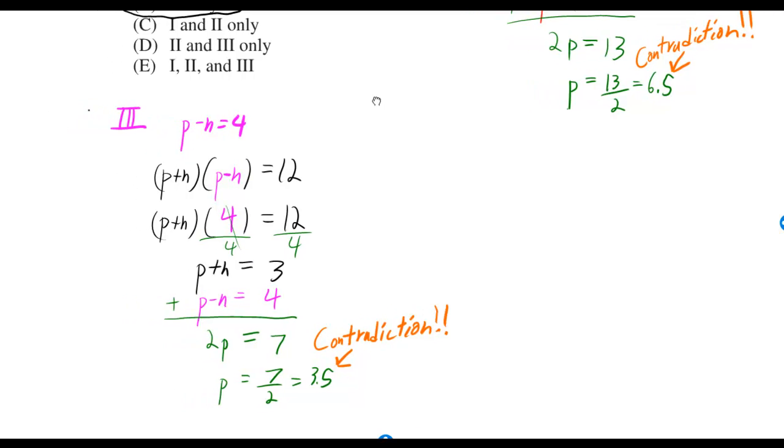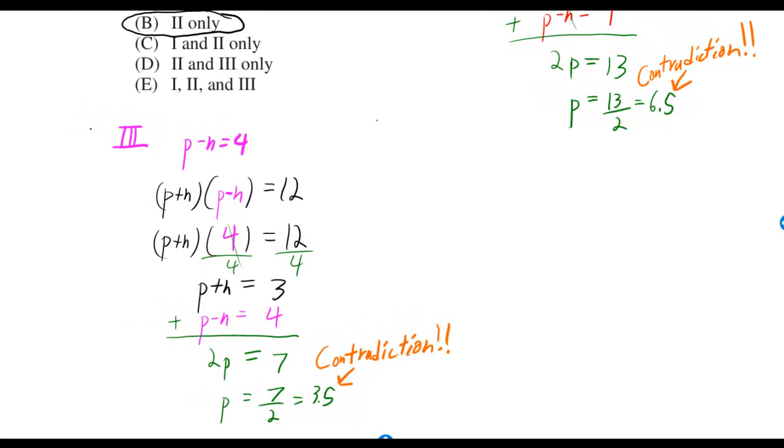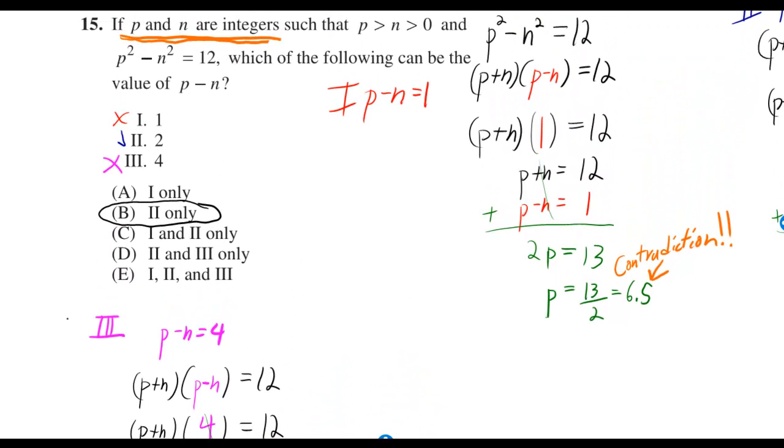Then you can do the same thing with p minus n being 4. And you end up getting p is 3.5. But that does contradict. So only 2 works.